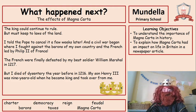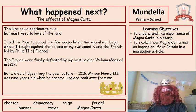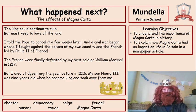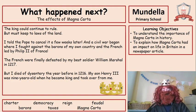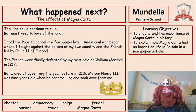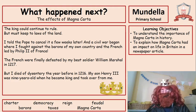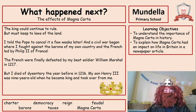The civil war began where I fought against barons of my own country and the French, led by Philip II of France. The French were finally defeated by my best soldier, William Marshall, the year after I died in 1217. My son, Henry III, was nine years old when he became king and took over from me.